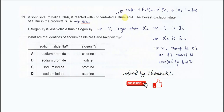We are quite clear that NaX could be sodium bromide or sodium iodide, and we need to further identify which halogen it is. If this is sodium bromide, then sodium bromide with concentrated H₂SO₄ will form HBr, and the HBr will further react with the H₂SO₄ in a redox reaction.